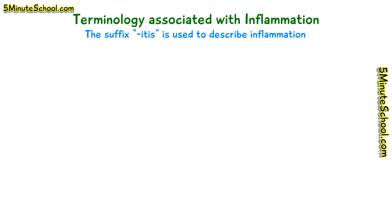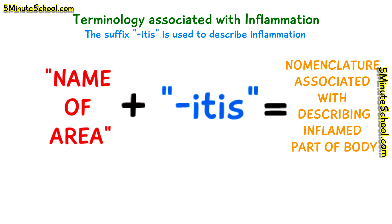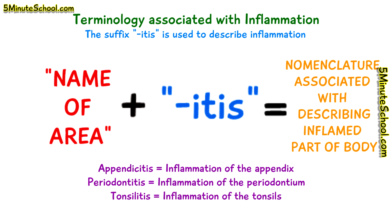In general, when a location of the body is inflamed, it's given a specific name — usually the name of the area followed by the ending '-itis'. For example, appendicitis is inflammation of the appendix, periodontitis is inflammation of the periodontium, and tonsillitis is inflammation of the tonsils.